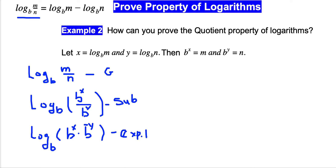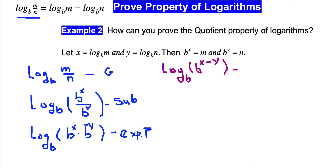Using exponential properties — abbreviated as 'exp. property' — since we are multiplying with the same base, we can write this as log base b of b^(x minus y). This again uses exponential properties.